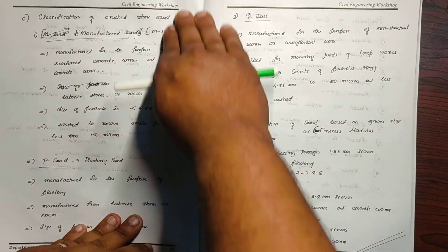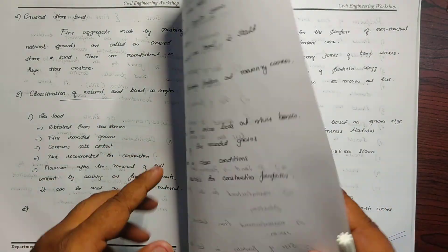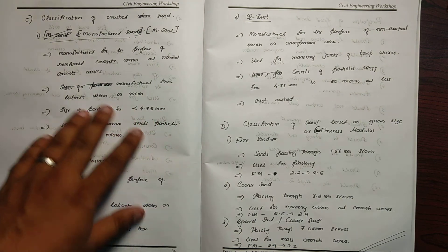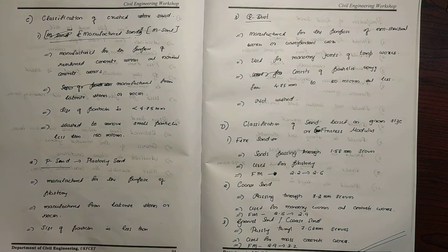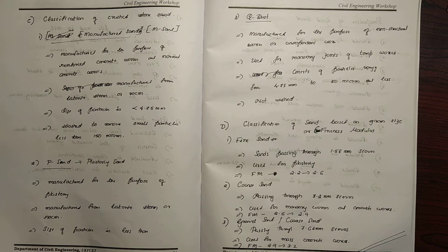River sand with fine and rounded grains available in clean conditions is more suitable for construction purposes. The classification of crushed stone sand: the crust is made of M-sand, which is manufactured sand. One company has a trademark of M-sand.